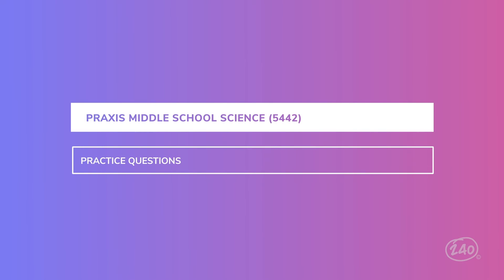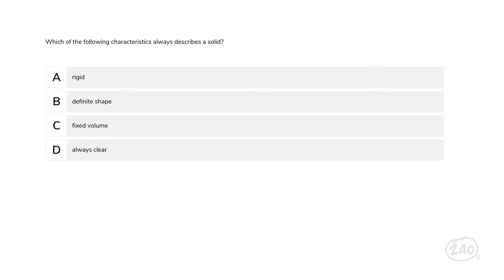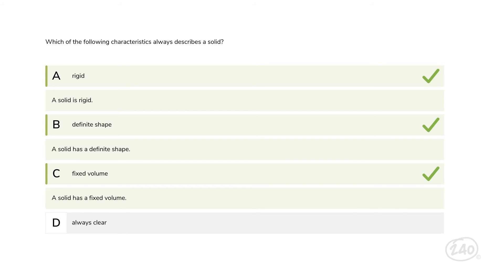And that was our last category — we dissected the whole test! Now that we've gone over some of the big concepts, let's look at some practice questions to show you how those concepts appear on the test, starting back with physical science. Remember when we talked about matter? Which of the following characteristics always describes a solid? Well, solids are rigid and they have a definite shape and a fixed volume, so choices A, B, and C are all correct.